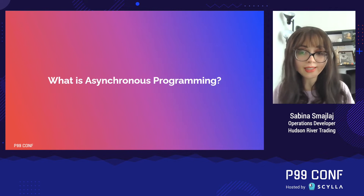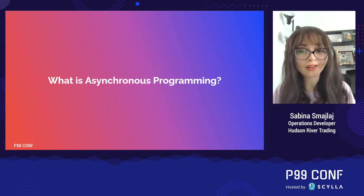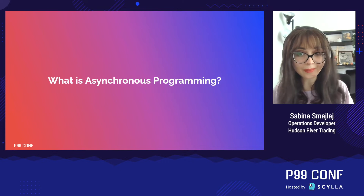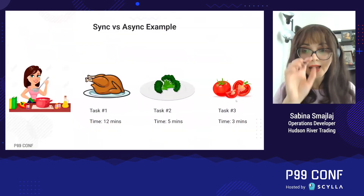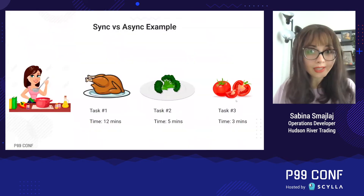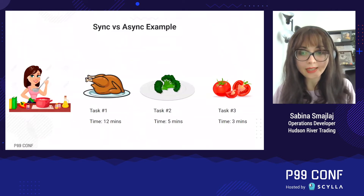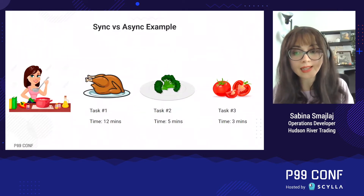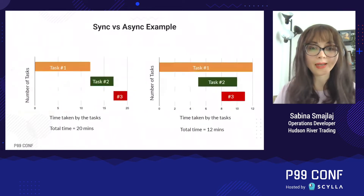To better understand sync versus async, let's take a look at a real-life example: cooking a meal. Let's say you are roasting chicken, which will take 12 minutes, steaming broccoli, which will take 5 minutes, and slicing tomatoes, which will take 3 minutes.